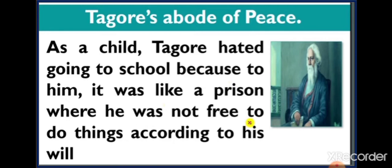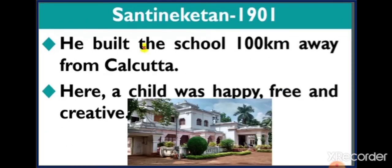He hated school from his childhood, and from that time Rabindranath Tagore dreamt that one day he would establish a school that would not be like traditional schools. Yes — Rabindranath Tagore set up a school named Shanti Niketan, where children were free to do whatever they wanted. He built the school 100 km away from Calcutta — Shanti Niketan in 1901.